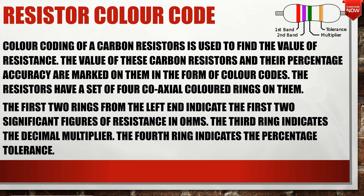To find the resistance value, we use the color code as shown in the diagram. Resistors use four colored rings. The first two rings from the left side indicate the first two significant figures. The third ring indicates the decimal multiplier, and the fourth ring indicates the percentage tolerance.